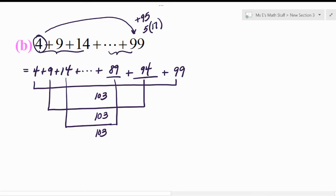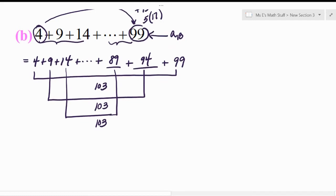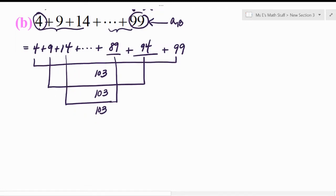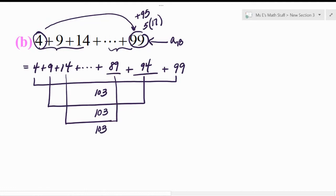So how many terms are in this list? I hope it makes sense, there would be 18 terms, because they started at four, and then they had to add five 17 times to get to the last term. So that's one way to figure out that that is the 18th term. So if there are 18 terms in the list, then how many 103s would we have? I hope it makes sense, we'd end up with half that many, right? So 18 terms, that means you'd have nine pairs that add up to 103.